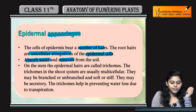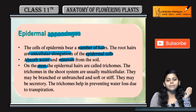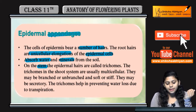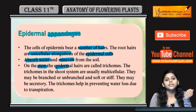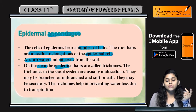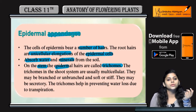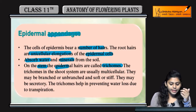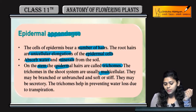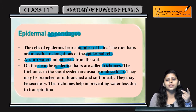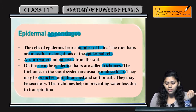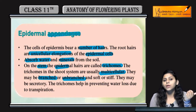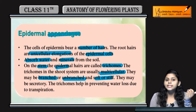If we talk about the shoot system or stem, then epidermal hair may be present on the stem. The stem's epidermal hair is called trichomes. Trichomes in the shoot system are usually multicellular. They can be branched, unbranched, soft, and stiff.